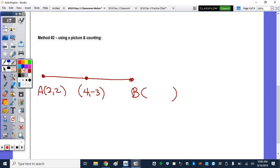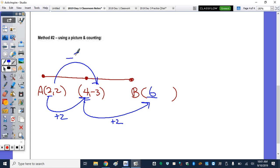So if you draw a picture, all you do is take a look. Remember, this 4 is in the middle of this x value and this x value. So if you take a look and count, to go from a 2 to a 4, you must have moved 2 units right, or added 2. So then if you add 2 here, 4 plus 2 is 6. To go on the y-axis from a 2 down to a negative 3, you must have subtracted 5. So if we subtract 5 again, because it has to be equidistant, negative 3 minus 5 is a negative 8. So B has the coordinates 6, negative 8.